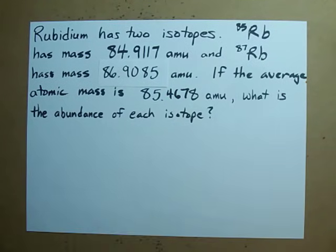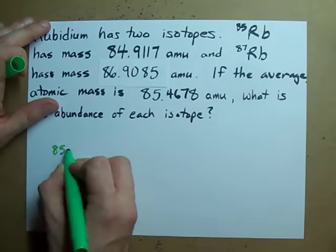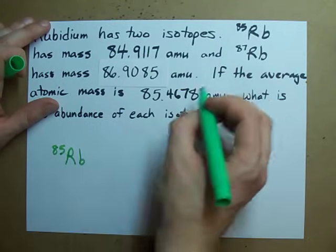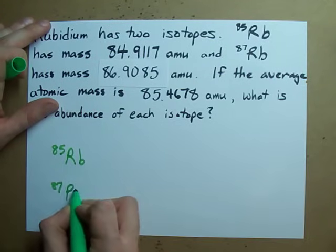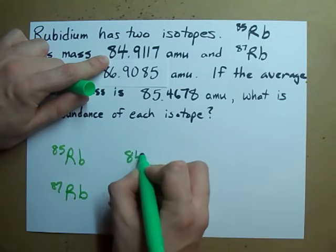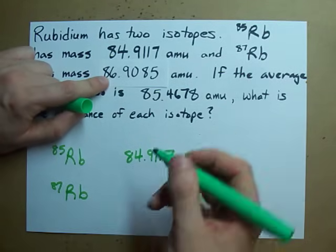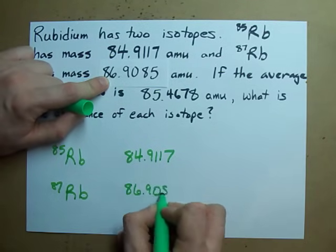I'm going to organize this in a chart for you. Rubidium has two different isotopes, RB85 and RB87. RB85 weighs 84.9117. RB87 weighs 86.9085.